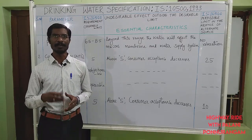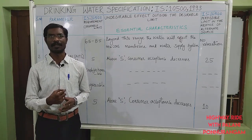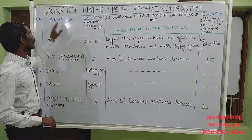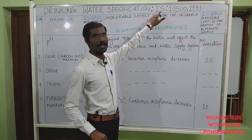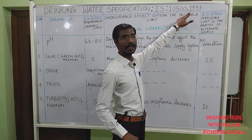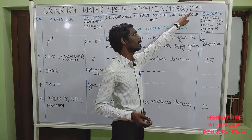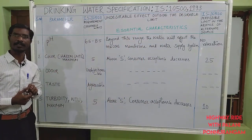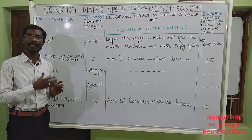Apart from WHO, all countries have their own standards for drinking water quality. For India, the drinking water specification is Indian Standard IS 10500, which started in 1992 and was revised in 1993. So this standard we are going to discuss as per IS 10500:1993.